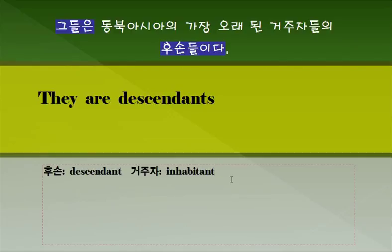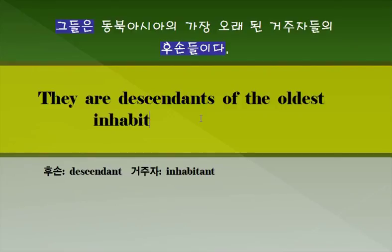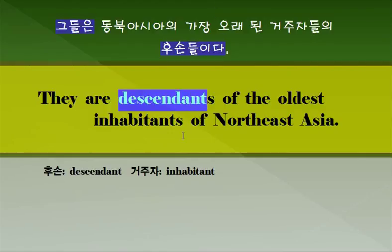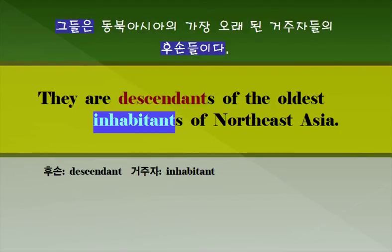가장 오래된—'oldest'를 쓰면 되겠죠. 'Oldest inhabitants' 복수형으로 써져야 됩니다. 동북아시아는 'Northeast Asia'. 주요 표현 다시 한번 확인하세요. 좀 어려운 단어—후손 'descendant', 그리고 거주자·거주민 'inhabitant'. 주요 단어 다시 한번 확인해 두시기 바랍니다.